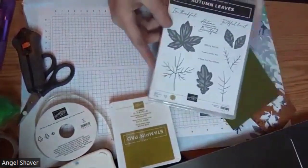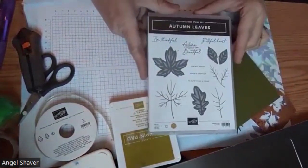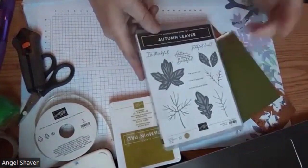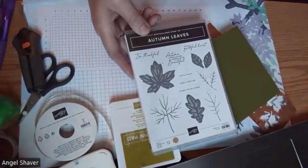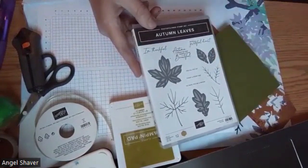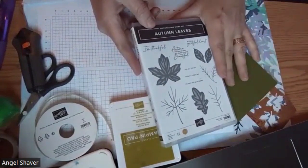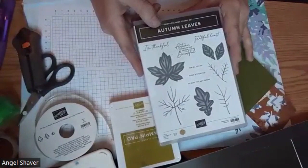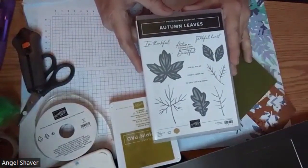We are using the Autumn Leaves stamp set and will be doing a little bit of stamping, but also using some dies from the bundle and paper that goes with the suite.